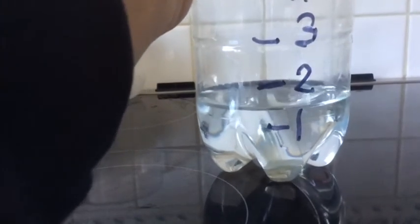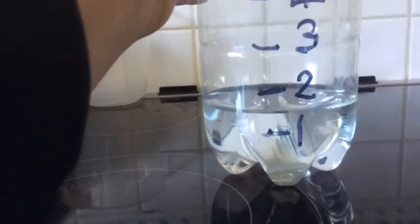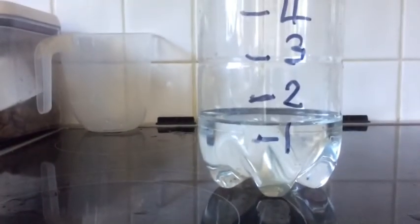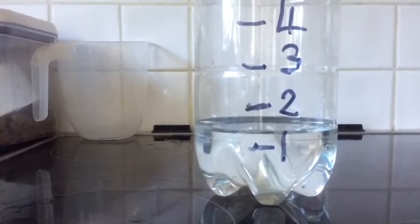If I tilt it forwards I can make it say 2 yoghurt pot fulls. But actually look, it's in between 1 and 2 yoghurt pot fulls, so it's about 1 and a half yoghurt pot fulls isn't it?